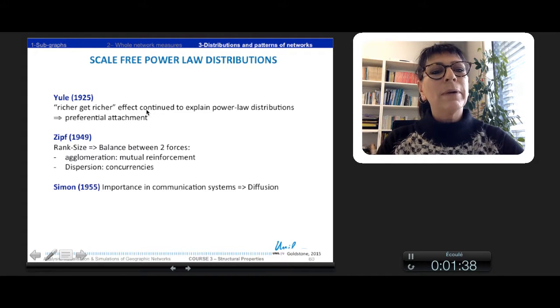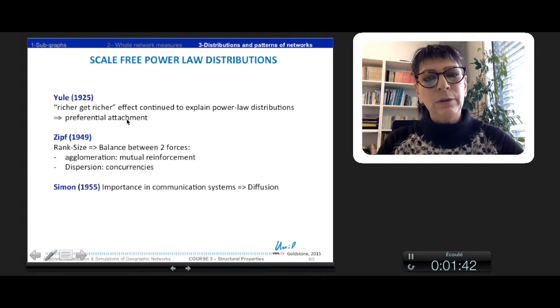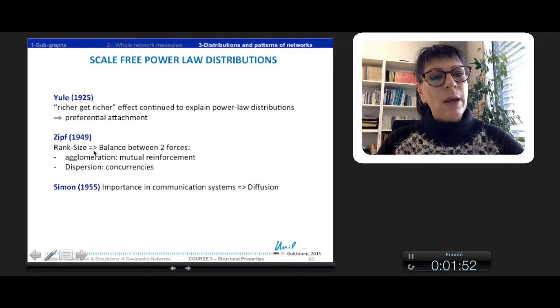We call it also preferential attachment. This kind of distribution was already described by Zipf in 1949 with the rank-size rule.